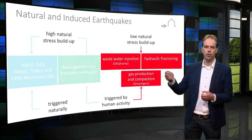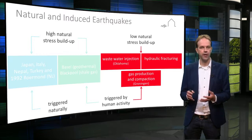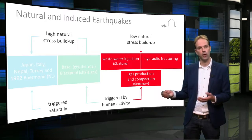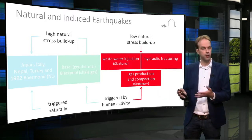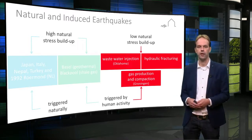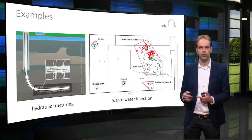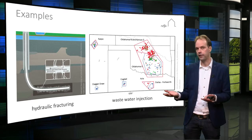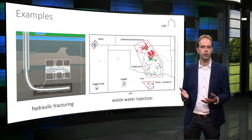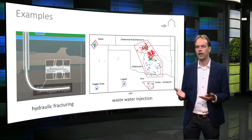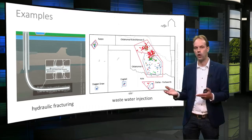An earthquake can also be induced by human activities in areas where there is little or no stress built up by tectonic processes and no natural earthquakes would occur. The human activities in the subsurface are then the cause of the occurring seismicity — for example, during hydraulic fracturing, during wastewater injection in porous reservoirs, during mining activities, or during oil and gas production and subsequent compaction, such as in the Groninger gas field.